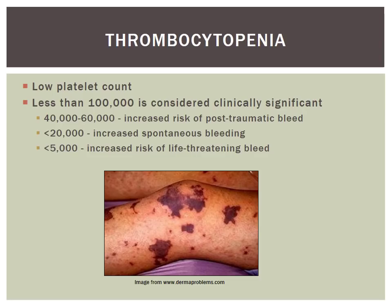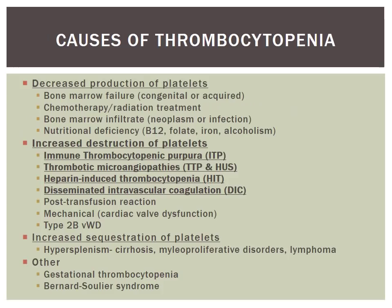Thrombocytopenia is defined as a low platelet count, typically below 150,000. Below 100,000 is considered clinically significant thrombocytopenia. Between 40,000 and 60,000, patients are at high risk for post-traumatic bleeding. Below 20,000, patients could have spontaneous bleeding, and anything below 5,000 is at risk for a life-threatening bleed. Causes of thrombocytopenia are divided into three groups: decreased production of platelets, increased destruction of platelets, or increased sequestration of platelets.